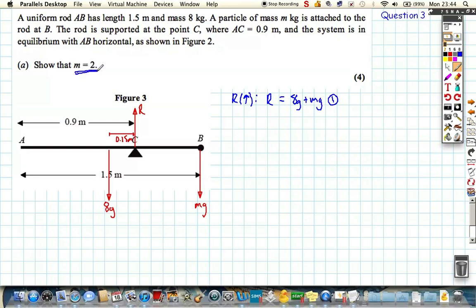So ideally we don't want to use that m is equal to 2, we want to get an answer for m equal to 2. So this is an unknown here, so if we take a resolution around this point, it's going to negate this R, it's not going to create a moment around C, because the distance is 0. And remember that moment is the force multiplied by the perpendicular distance. So if that distance is 0, the moment will be 0.